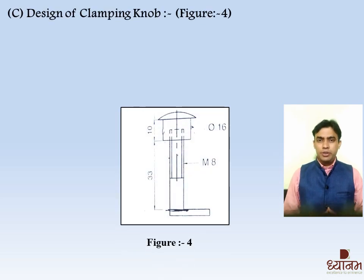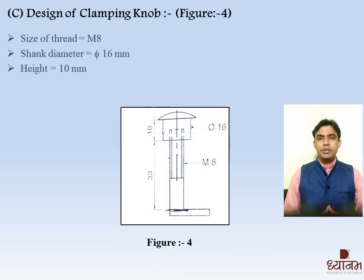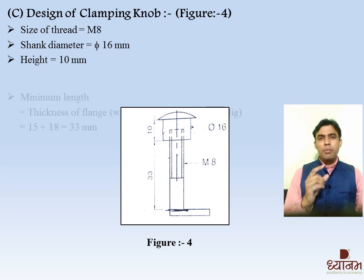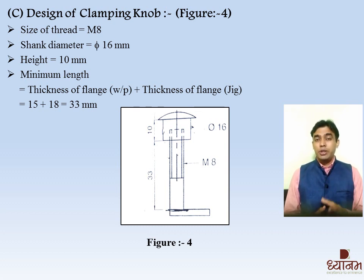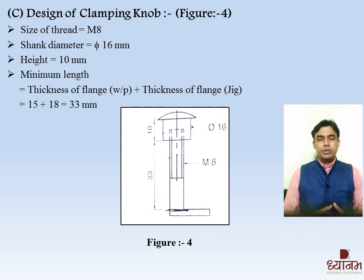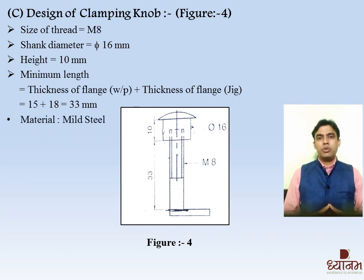Standard size of clamping device is easily available in the market, and the standard data is shown on your screen. The minimum length is one of the very essential formulas for the clamping device. Minimum length equals thickness of flange of workpiece plus thickness of flange of Jig. Adding these two different thicknesses, the answer is 33 mm, as shown in the figure. The material is mild steel and the quantity of clamping device is 2.